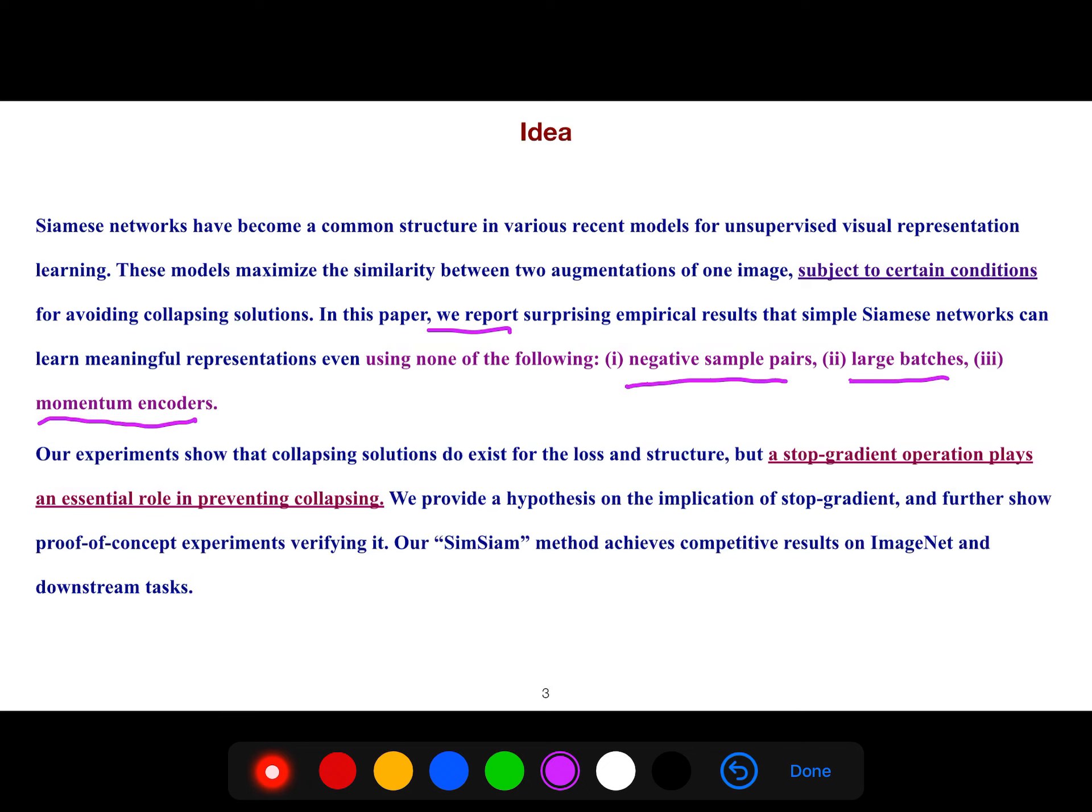Our experiments show that collapsing solutions do exist for the loss and structure, but a stop-gradient operation plays an essential role in preventing collapse. Although I read another paper saying that this paper still collapses if the model is simple.